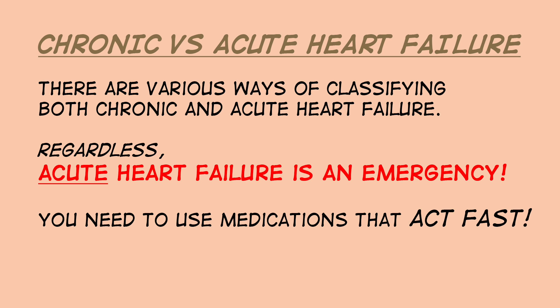In class, we'll also talk about chronic and acute heart failure. Chronic heart failure is a slow process in which fluid gradually backs up. Acute heart failure is when the heart failure suddenly worsens enough that the lungs fill with fluid very quickly — in that situation you have to fix the patient within a very short time, otherwise they essentially drown in their own fluids. So we've now talked about heart failure, its causes, left versus right heart failure, and ejection fraction. Next we'll talk about the drug classes we use for heart failure.